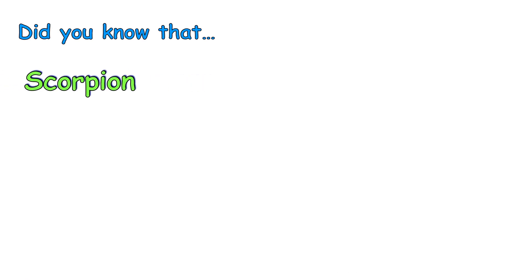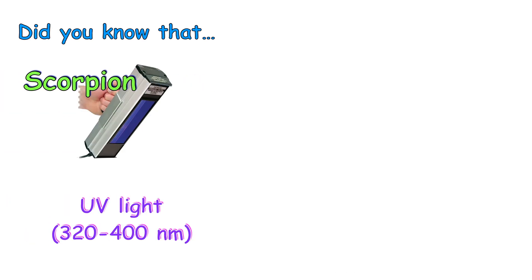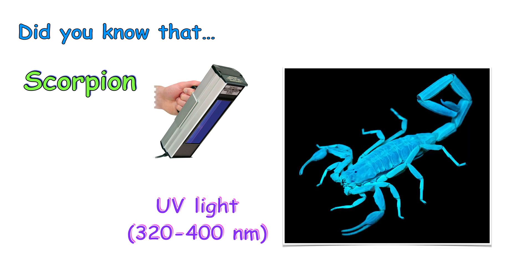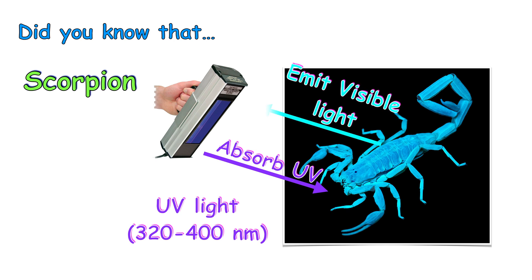Did you know that scorpions can glow under UV light, turning a teal green? Under UV light between 320 and 400 nanometers, molecules in their exoskeleton absorb UV and re-emit it as visible light.